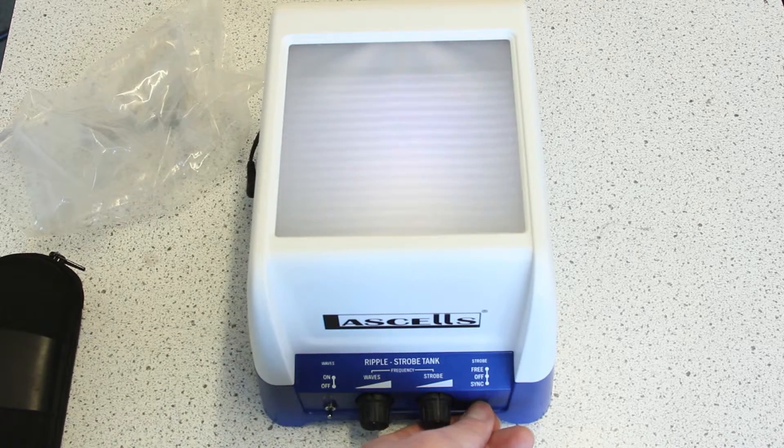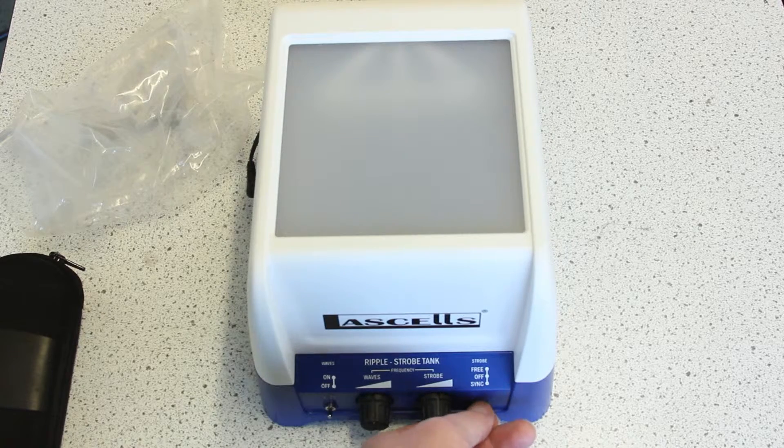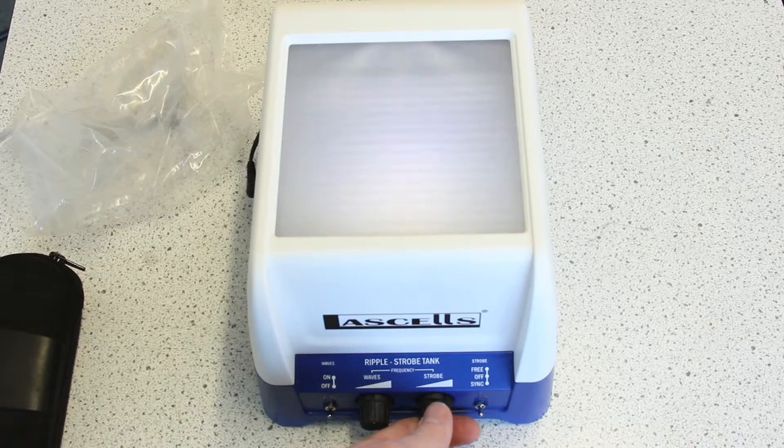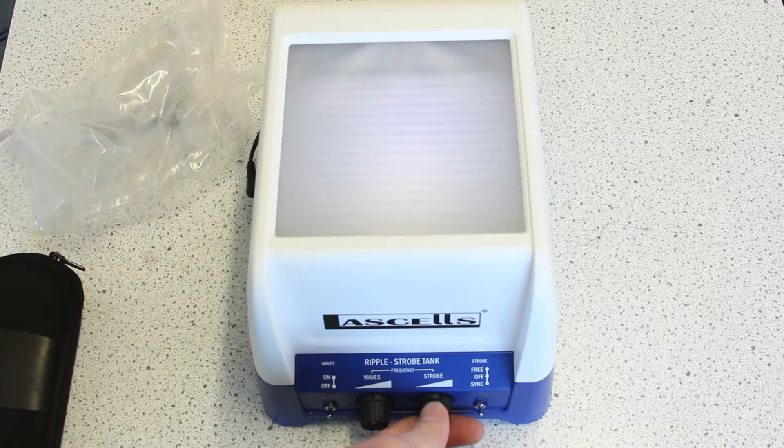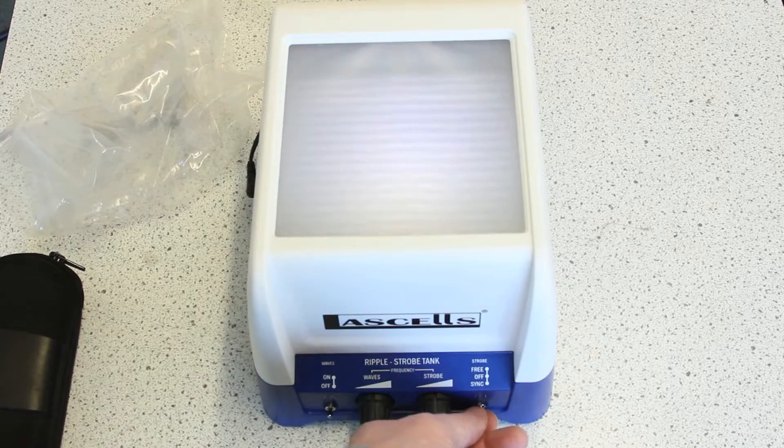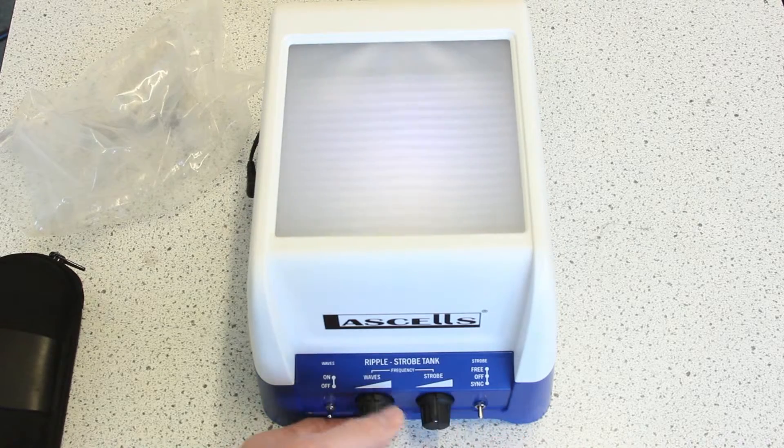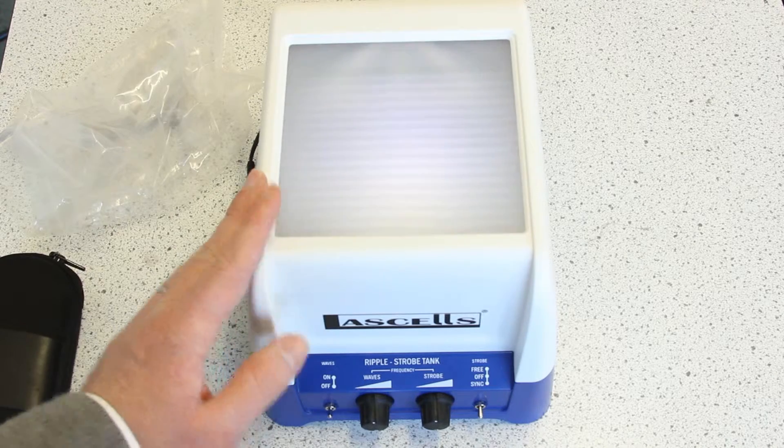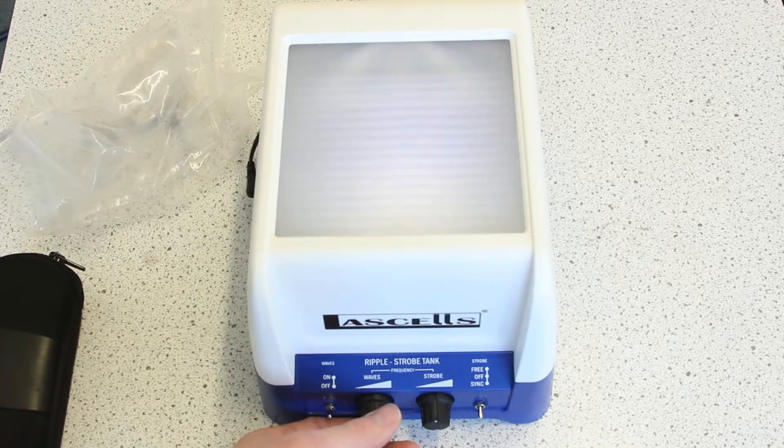If I turn the strobe on a very high frequency you see the waves are actually moving. They're moving along, they're moving through the water, but because it's synced to the frequency of the waves they appear as if they're not moving at all. And that allows us to do some analysis on the wave fronts.